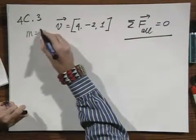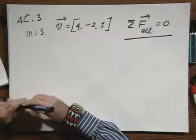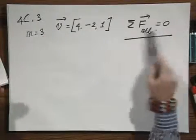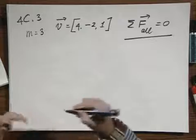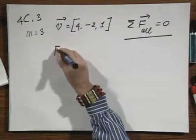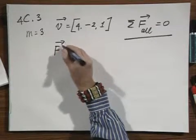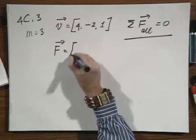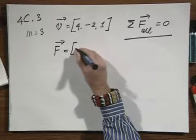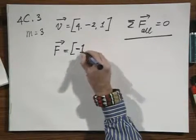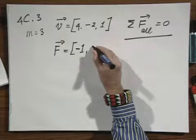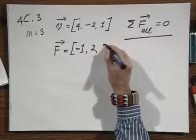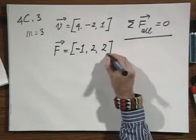It has a mass of 3 kilograms. So there are several forces working on this object, and there is one force which is lifted out for this problem, and that one force has in the x direction minus 1, in the y direction plus 2, and in the z direction plus 2 newtons.